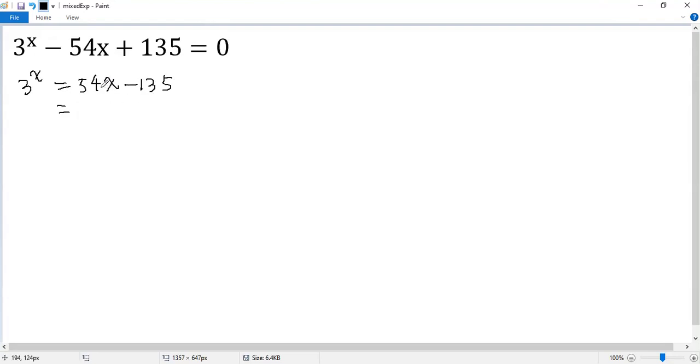We know there's a greatest common factor 27 for the right side, so we get 3 to the power of x equals 27. Take 27 out, so we get 2x minus 5.